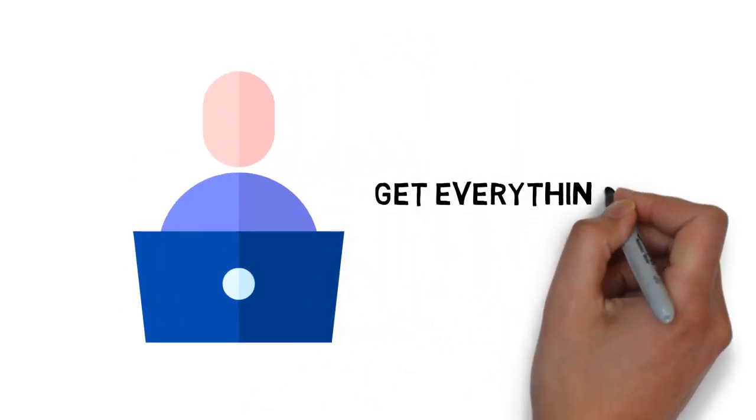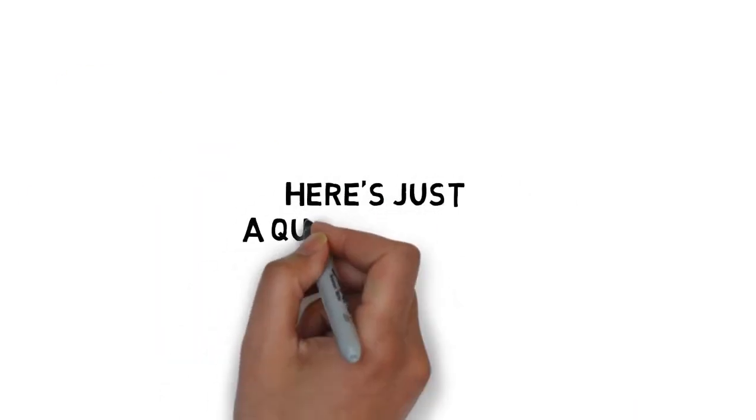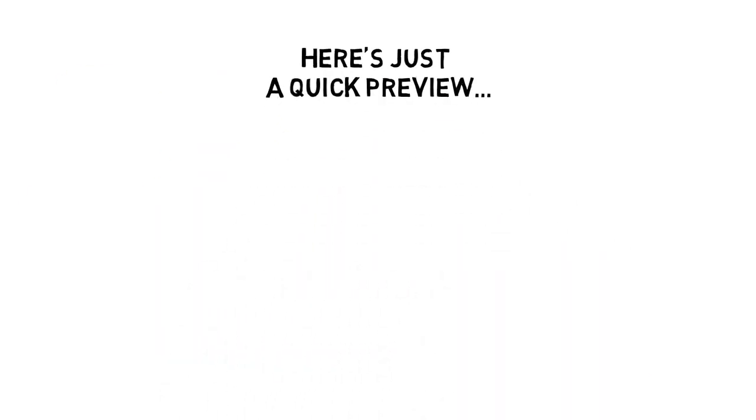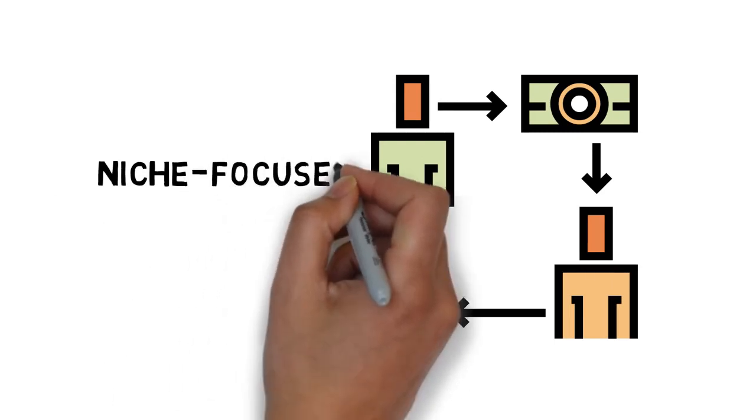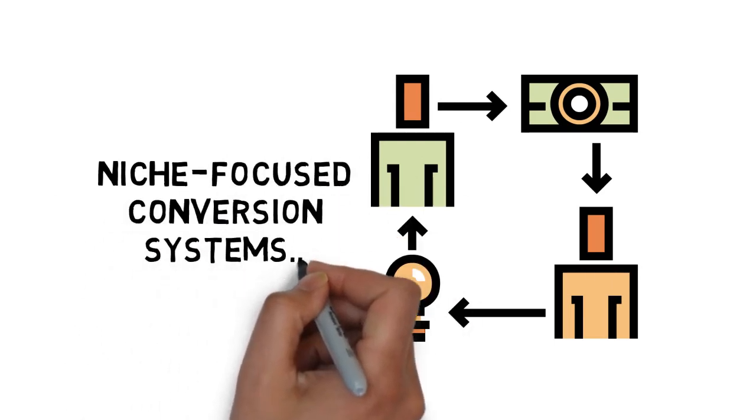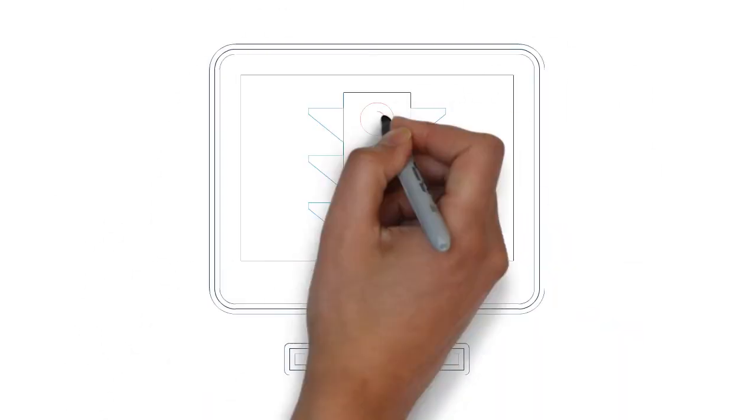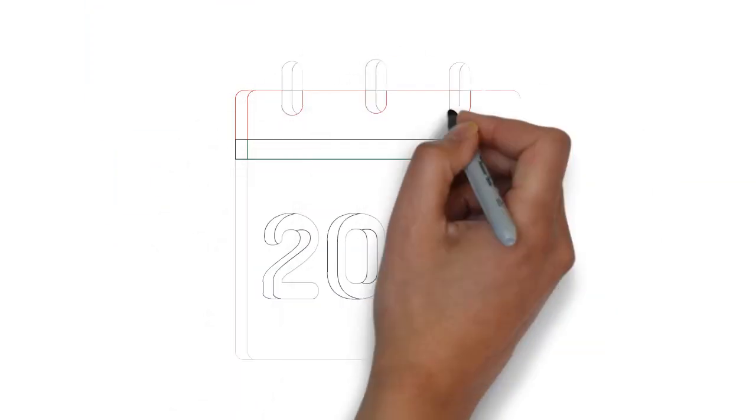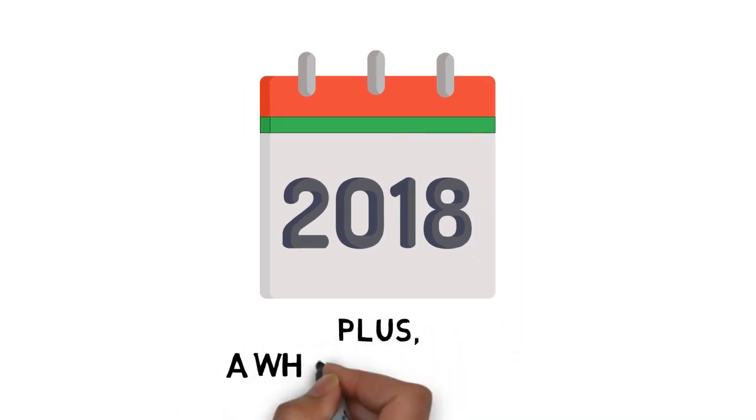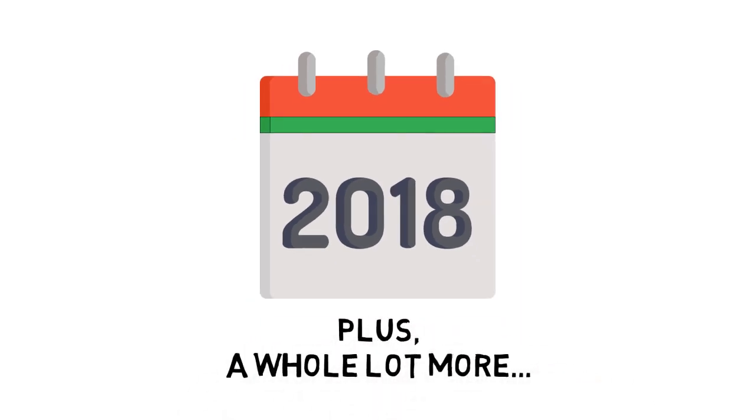You will become a complete expert on this and you'll get everything you need inside to do the same. Here's just a quick preview of what you'll discover inside. Picking your niches based on ROI and other crucial factors. Picking the right affiliate program to maximize conversions. How to create niche-focused conversion systems. Traffic generation strategies. Traffic optimization strategies. The key to affiliate marketing success in 2018 and beyond. Plus a whole lot more.